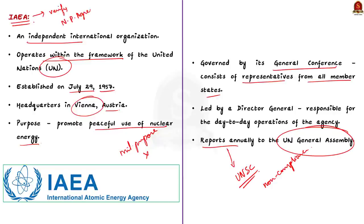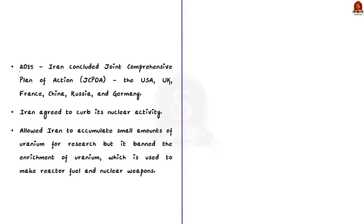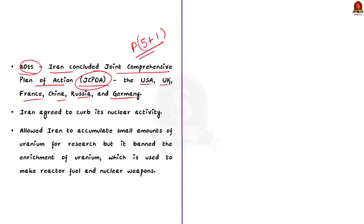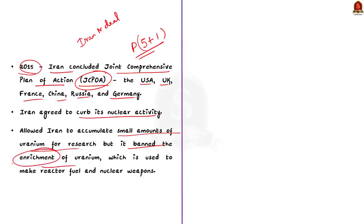One of the main functions of the IAEA is to verify compliance with international nuclear non-proliferation agreements. In 2015, Iran signed an agreement with the USA, UK, France, China, Russia and Germany on a long-term deal for its nuclear program — this was called the P5+1 grouping. The deal was named the Joint Comprehensive Plan of Action and was commonly called the Iran Nuclear Deal. Under the deal, Iran agreed to reduce its nuclear activity, and in turn, the world powers agreed to lift the sanctions on Iran. The agreement allowed Iran to gather small amounts of uranium for research, but banned the enrichment of uranium for nuclear weapons.